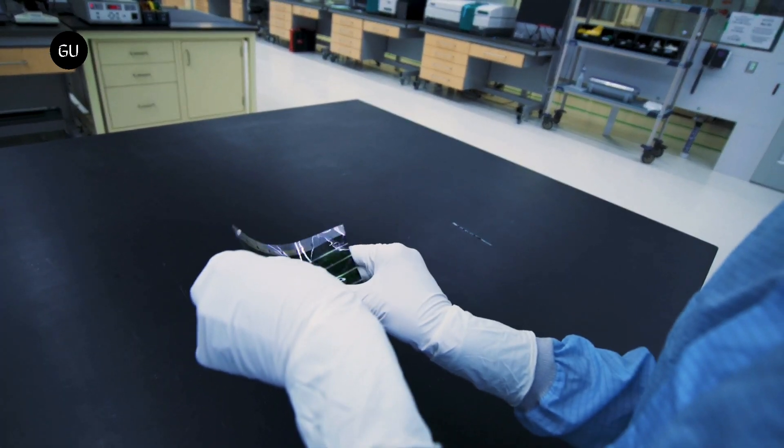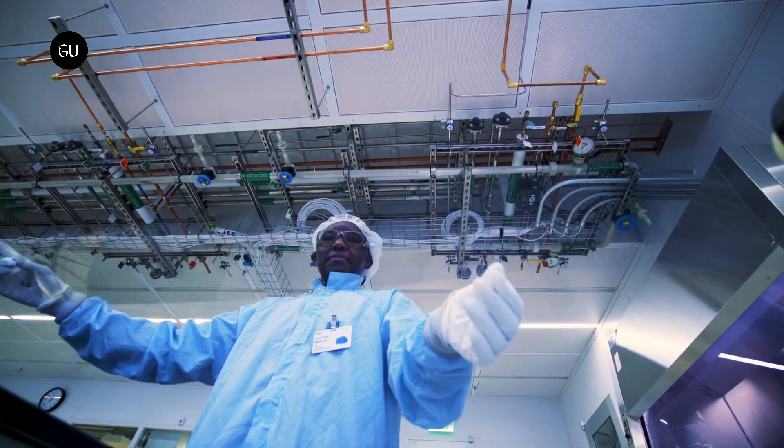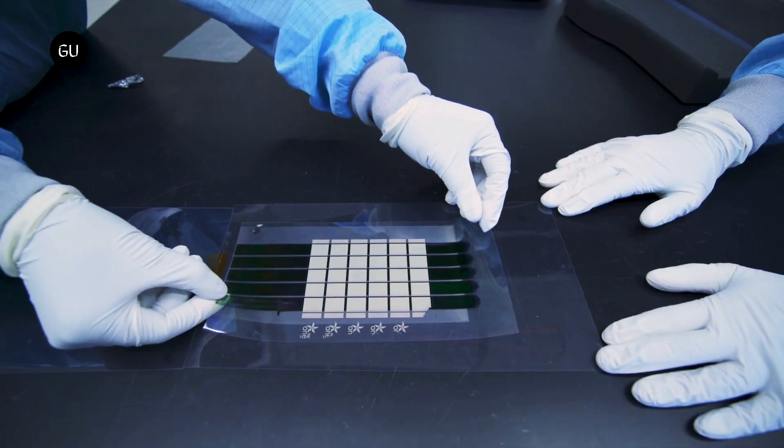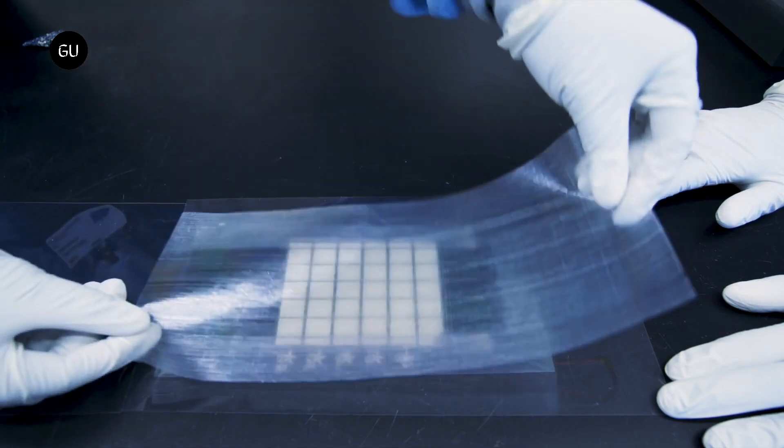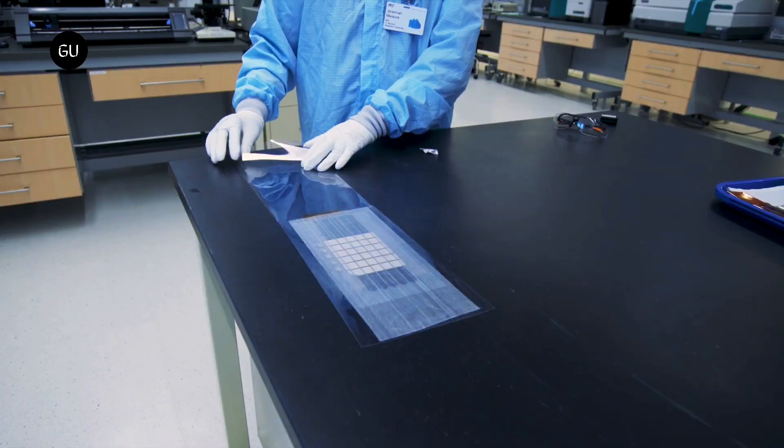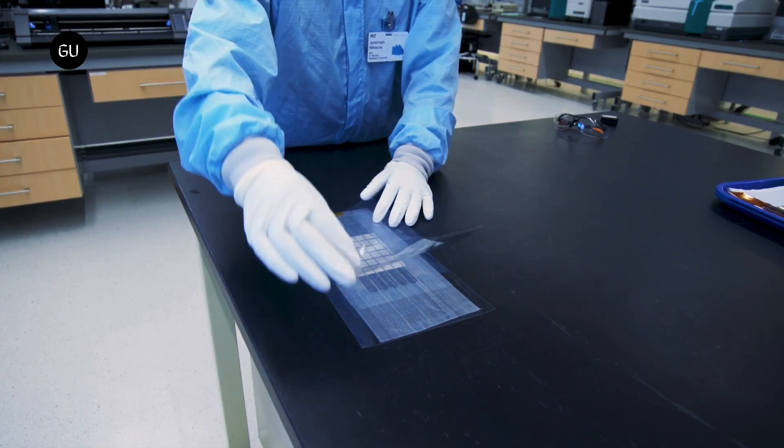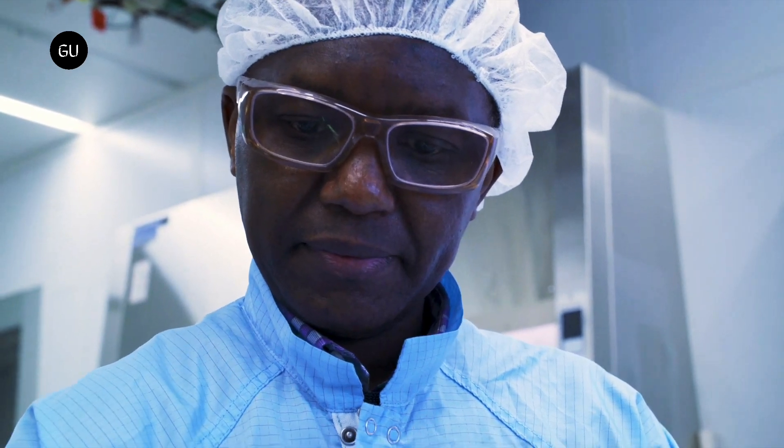To produce the solar cells, they use nanomaterials that are in the form of printable electronic inks. Working in the MIT nano clean room, they coat the solar cell structure using a slot die coater, which deposits layers of the electronic materials onto a prepared releasable substrate that is only three microns thick.